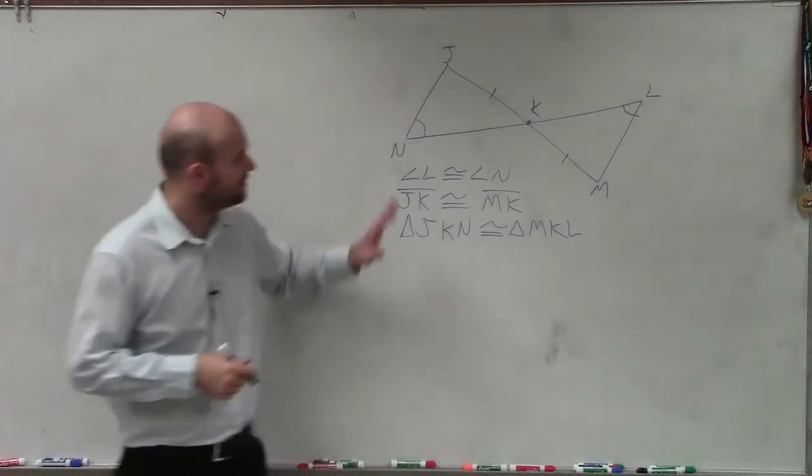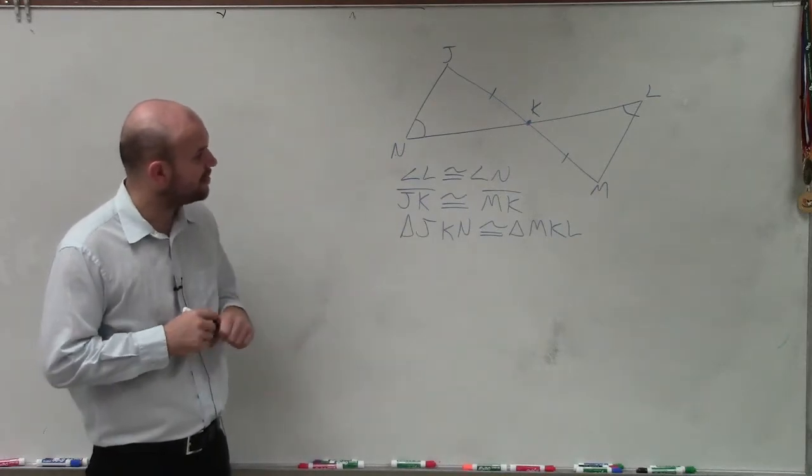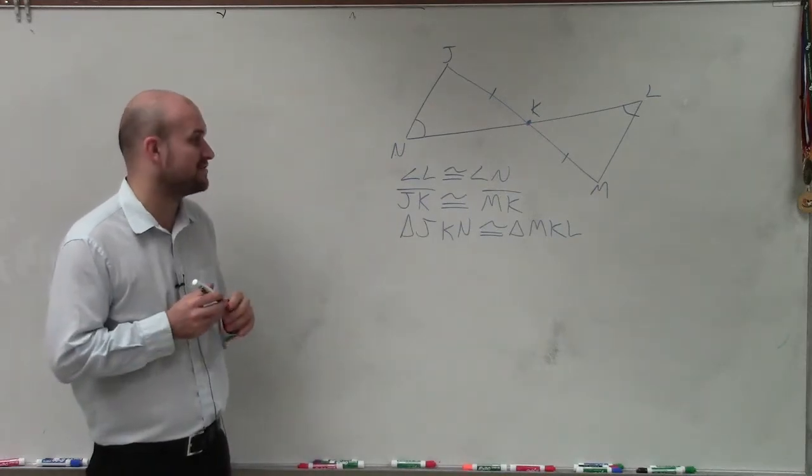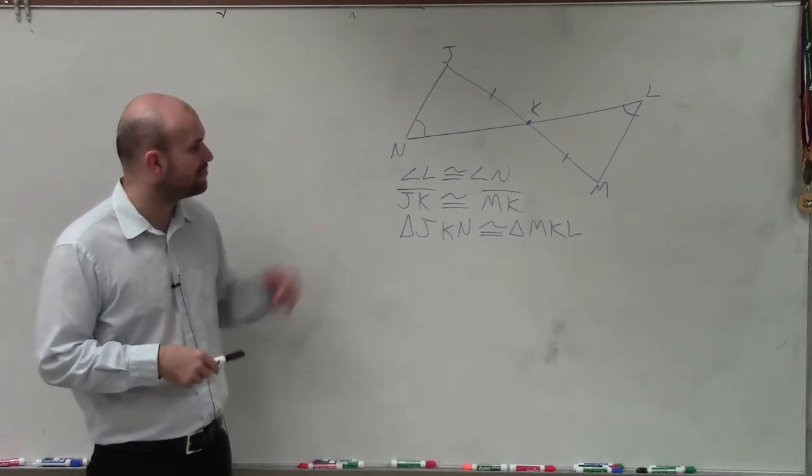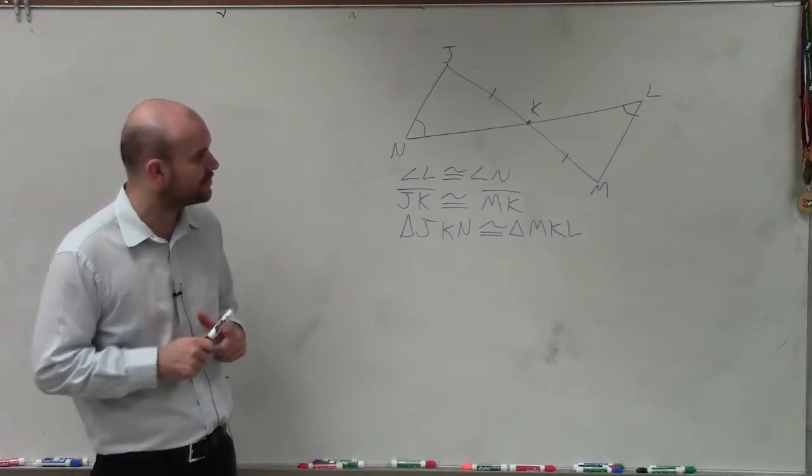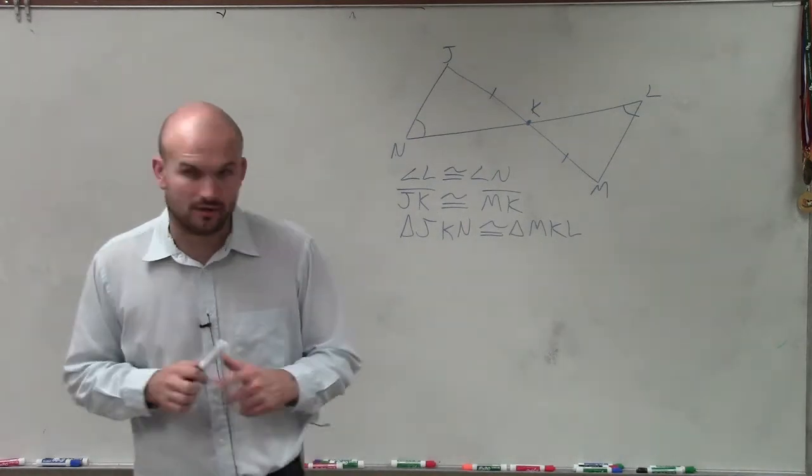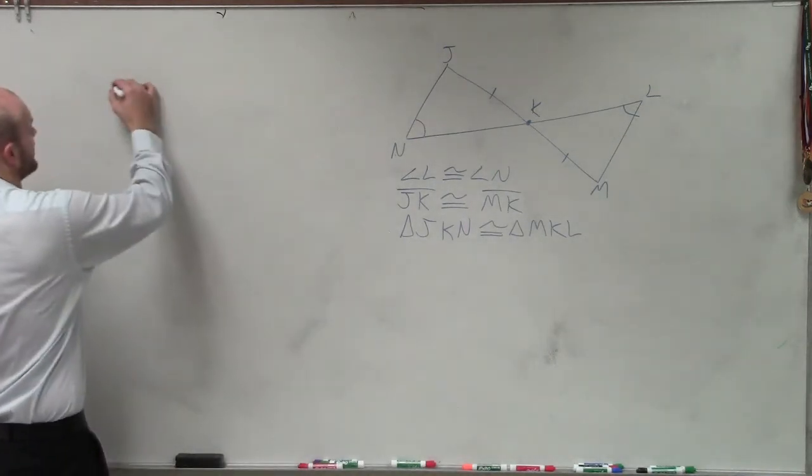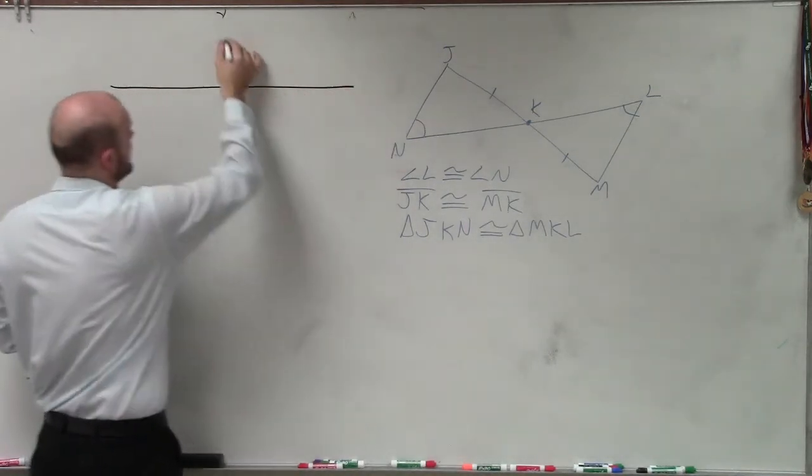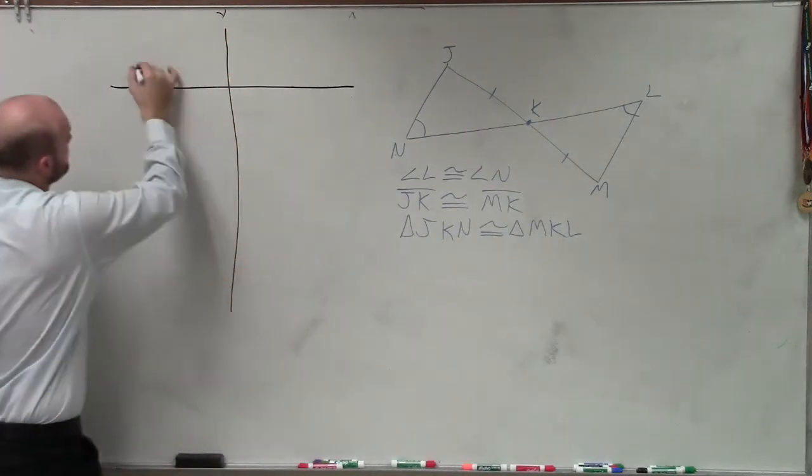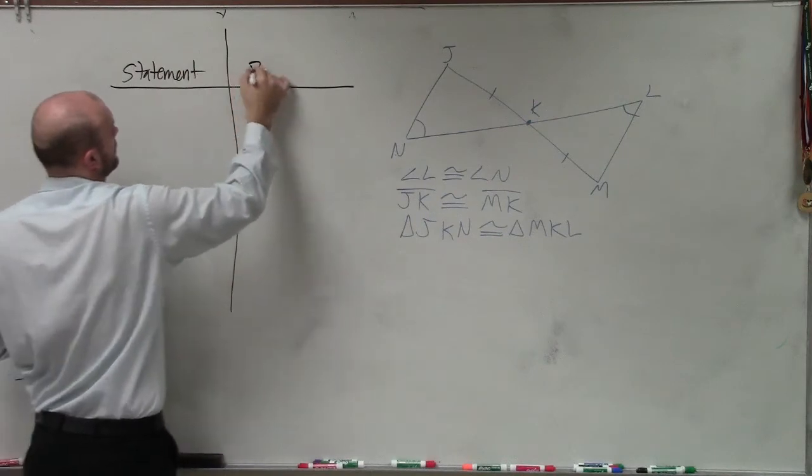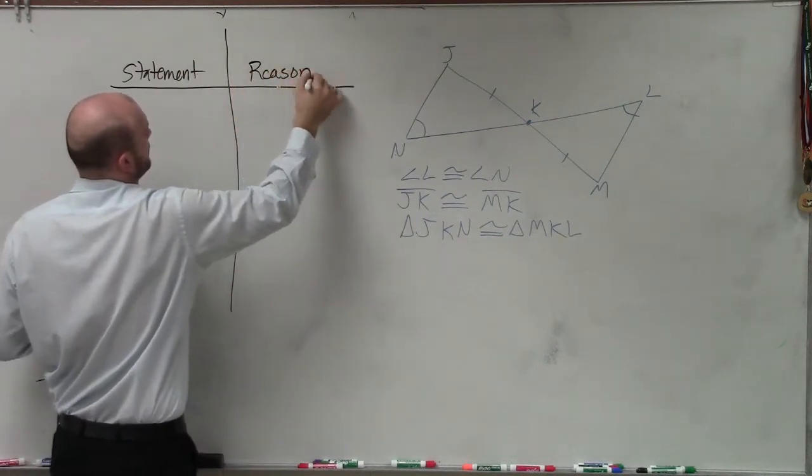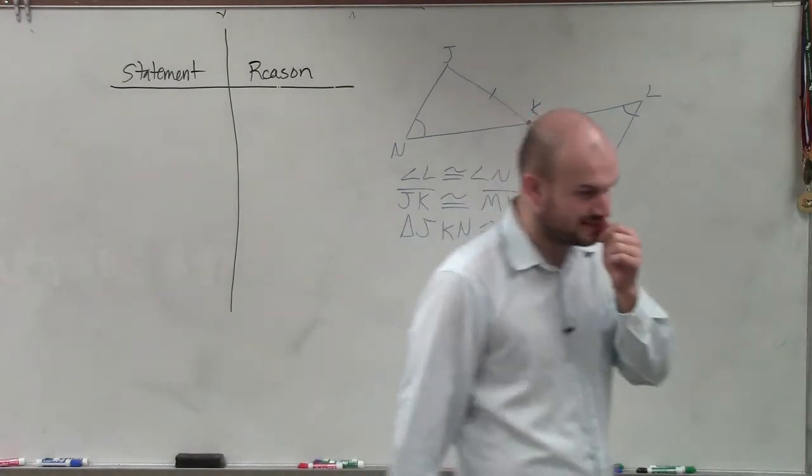So in this example, ladies and gentlemen, what they provide us is they say measure of angle L is congruent to measure of angle N. Line JK is congruent to line MK. And then prove that triangle JKN is congruent to triangle MKL. So again, to write our proof, we're going to have a statement and a reason.